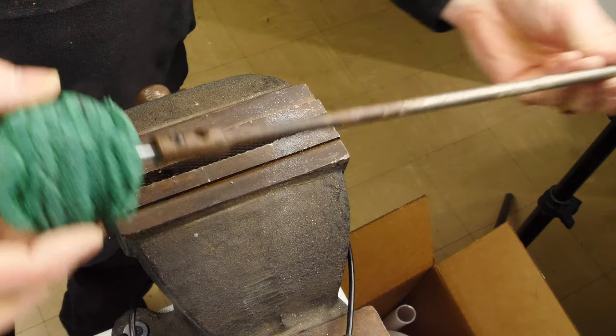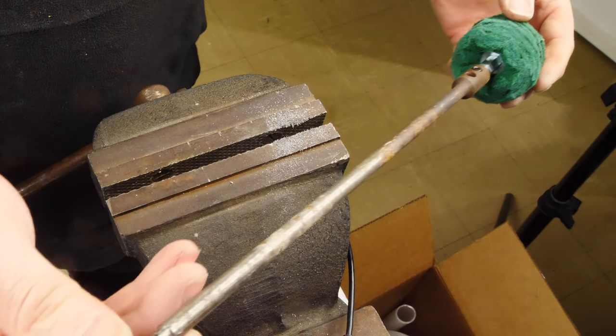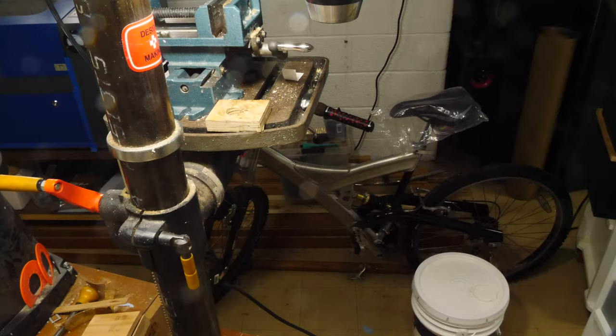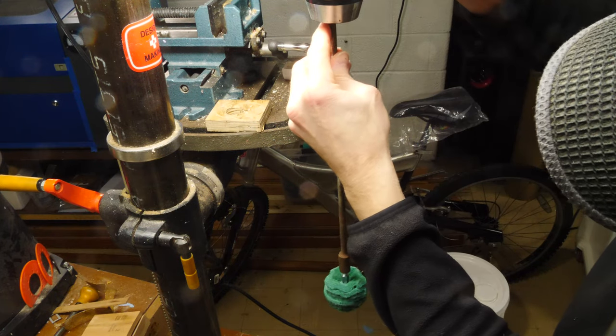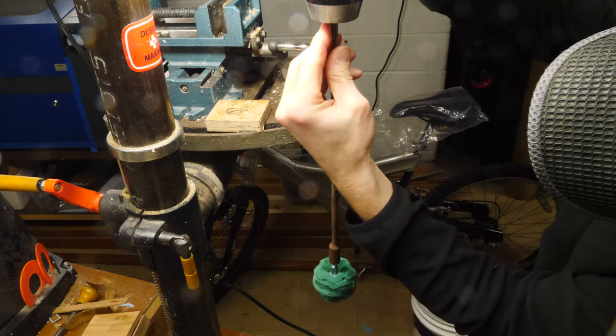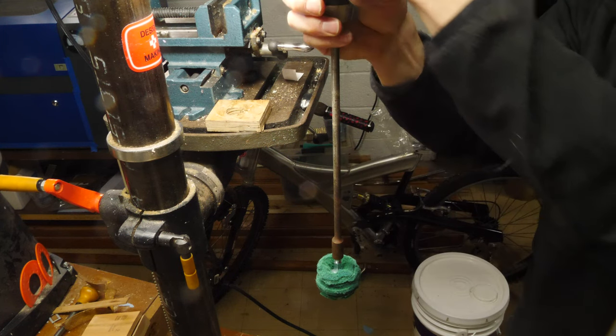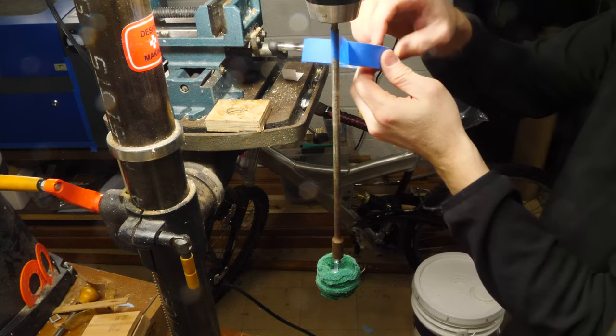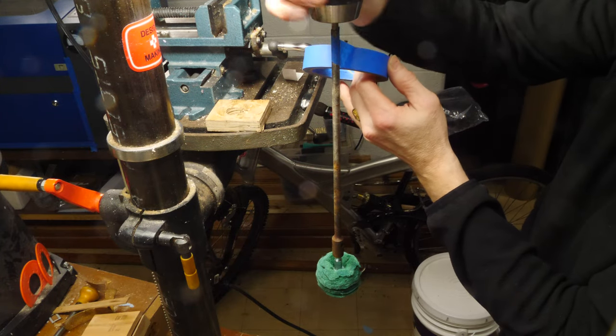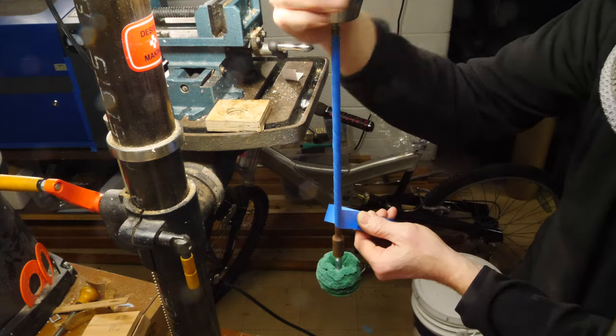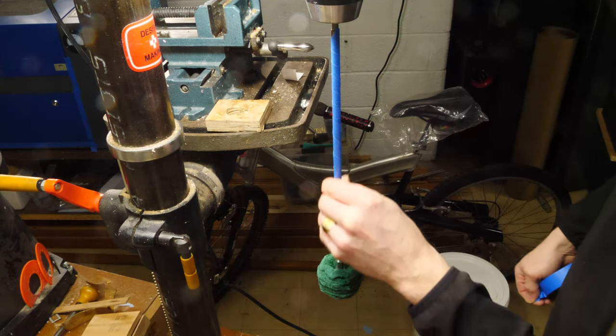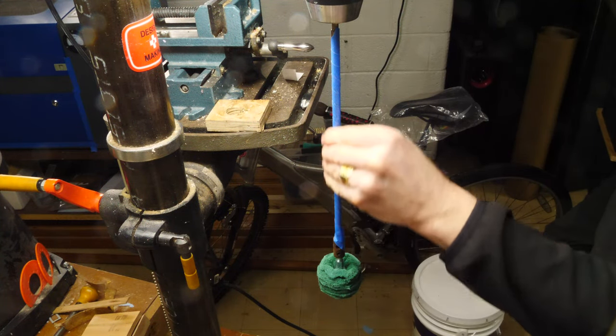This drill extension is, of course, the perfect thing to allow me to get to the inside of the bottle. I'm going to chuck it up in my drill press, and I'm going to put some tape onto the metal mandrel. And this tape is just to protect the bottle from being scratched by the metal on the extension of the drill.